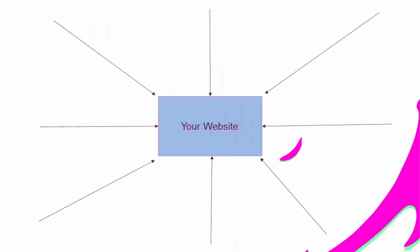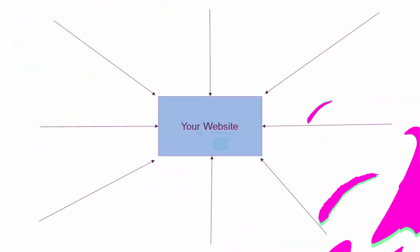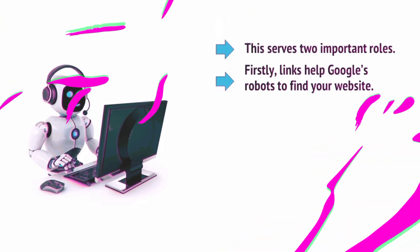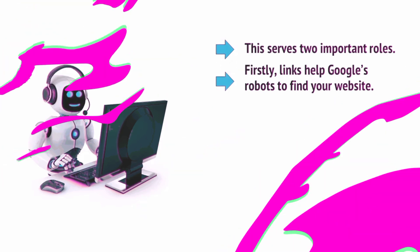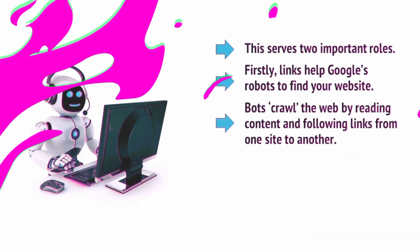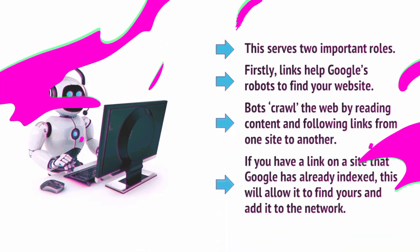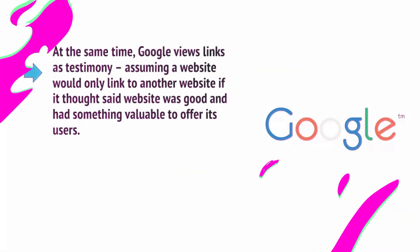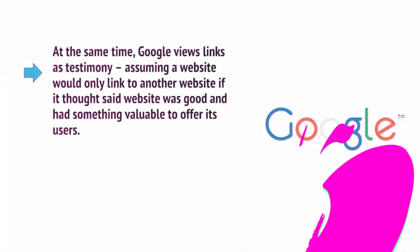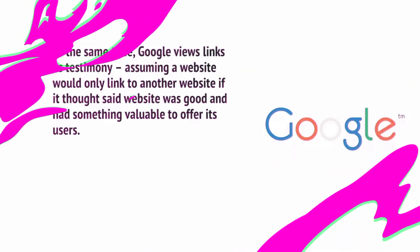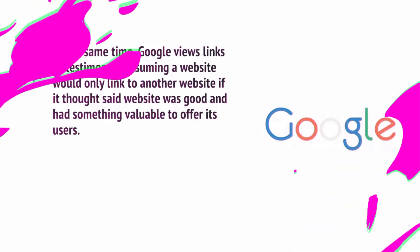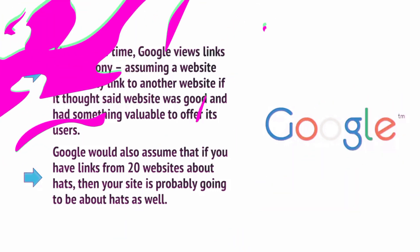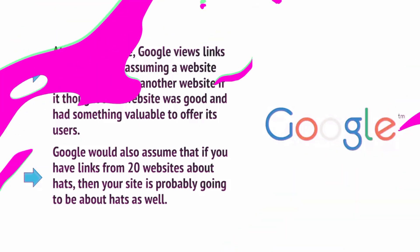Your links profile, also called your backlinks profile, is essentially determined by how many links you have pointing to your website coming from other sites. This serves two important roles. Firstly, links help Google's robots to find your website — bots crawl the web by reading content and following links from one site to another. If you have a link on a site that Google has already indexed, this will allow it to find yours and add it to the network. At the same time, Google views links as testimony, assuming that a website would only link to another if it thought that site was good and had something valuable to offer its users. Google would also assume that if you have links from 20 websites about hats, then your site is probably going to be about hats as well, especially if the anchor text has your search phrase in it.